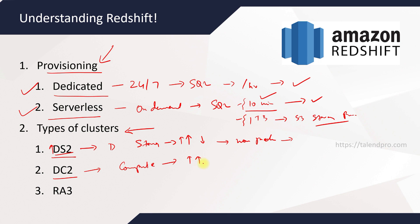Dense Compute is a type of cluster where your compute is at a higher limit, so it will have more processing power, meaning your data processing will be much faster compared to the DS2 type of cluster. DC2 clusters are mostly used by business-critical applications, production-based applications, query performance, or any OLAP analysis. The third cluster type is RA3, which is the latest offering from AWS, in which storage and compute is decoupled.